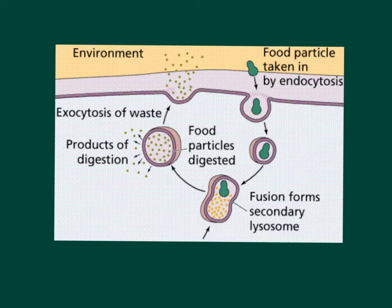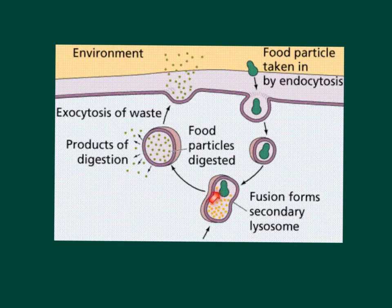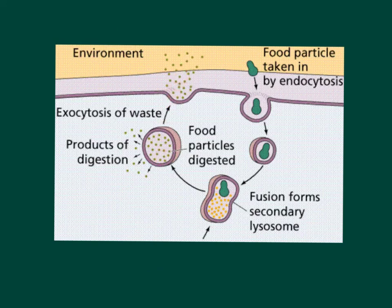Here we can see an example of endocytosis and exocytosis in one picture. Let's say this is an amoeba or some type of protist — a single-celled organism. It might take in a food particle through endocytosis. That food particle could then fuse with a lysosome. Lysosomes contain all sorts of digestive enzymes that break down and digest that food particle. The nutrients and organic molecules the cell wants might then diffuse out into the cell, and everything else that's a waste product can be expelled through exocytosis. So again, this is active transport — the big key is going from low to high concentration, so energy is required.